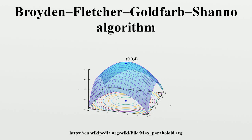However, BFGS has proven to have good performance even for non-smooth optimizations. In quasi-Newton methods, the Hessian matrix of second derivatives doesn't need to be evaluated directly. Instead, the Hessian matrix is approximated using rank-1 updates specified by gradient evaluations.